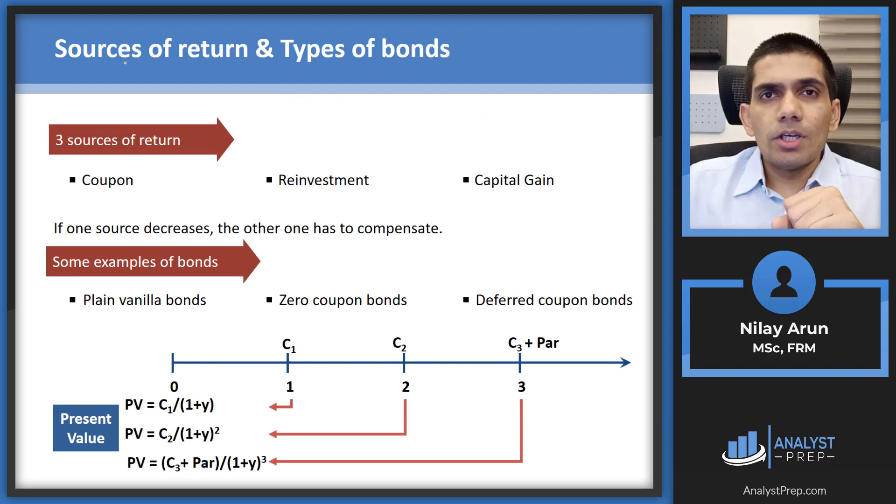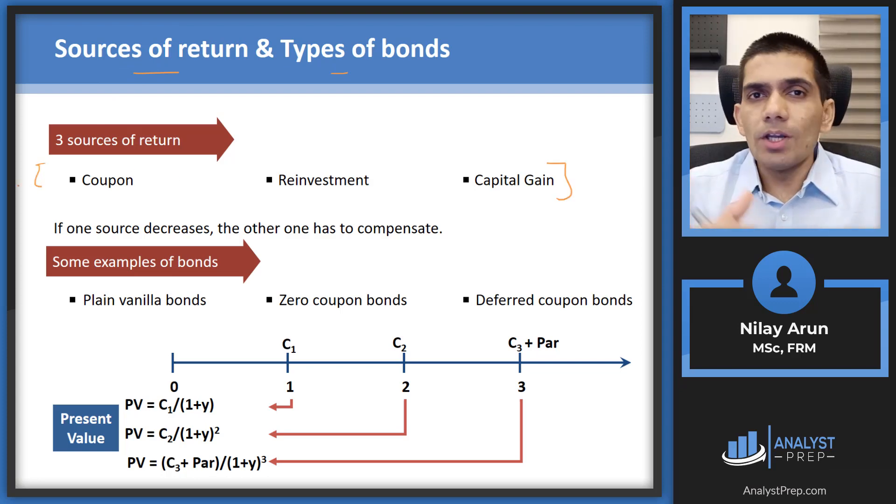Now the next concept that we're looking at is the source of return and the types of bond. Now this is quite an important thing because it helps you develop intuition for the various different kind of bonds which are there. So I would strongly recommend that you should remember the three sources of return. It helps you with your analysis everywhere and it's quite simple. Now what are the various sources of return from a bond? First is obviously the coupon income. That is the regular rate of return which you're getting. So that's the first one.